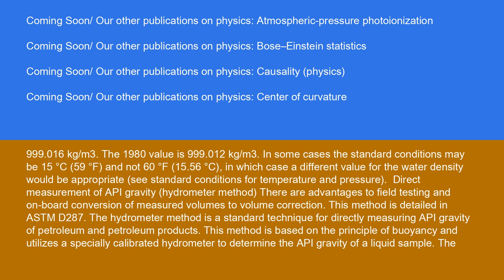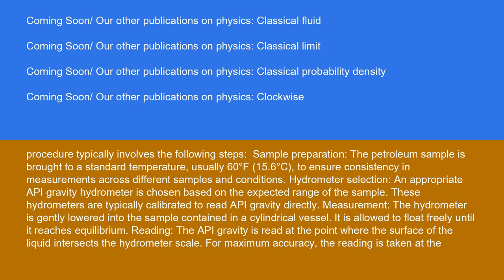Direct measurement of API gravity hydrometer method. There are advantages to field testing and onboard conversion of measured volumes to volume correction. This method is detailed in ASTM D287. The hydrometer method is a standard technique for directly measuring API gravity of petroleum and petroleum products. This method is based on the principle of buoyancy and utilizes a specially calibrated hydrometer to determine the API gravity of a liquid sample.